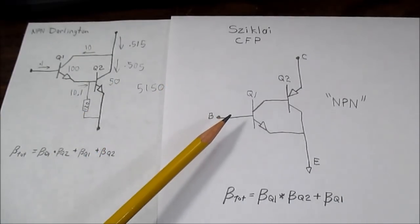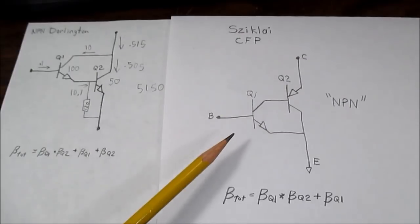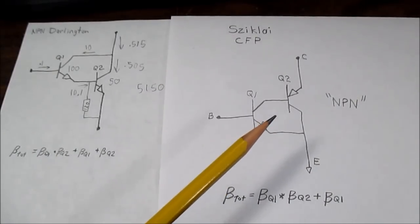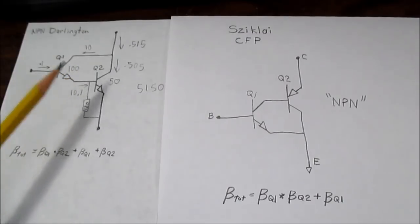This is also known as the complementary feedback pair or complementary Darlington configuration. So we'll investigate some interesting characteristics of the circuit and then at the end I'll talk about its use in audio power amplifier stages. This and of course the Darlington circuit. Which one's better? And there's a lot of debate there.